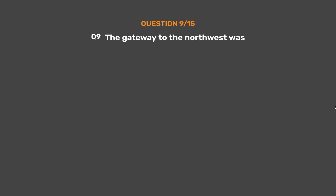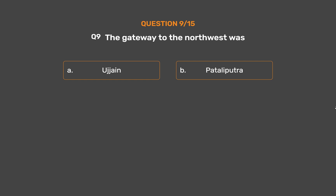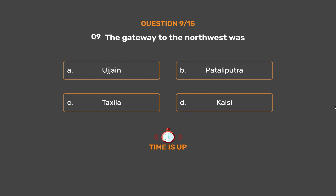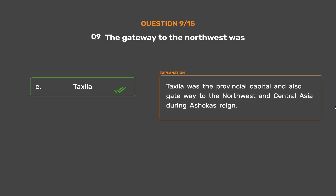Question No. 9. The gateway to the north-west was: Option A: Ujjain. Option B: Pataliputra. Option C: Taxila. Option D: Kalsi. The correct answer is Option C: Taxila. Taxila was the provincial capital and also gateway to the north-west and central Asia during Ashoka's reign.